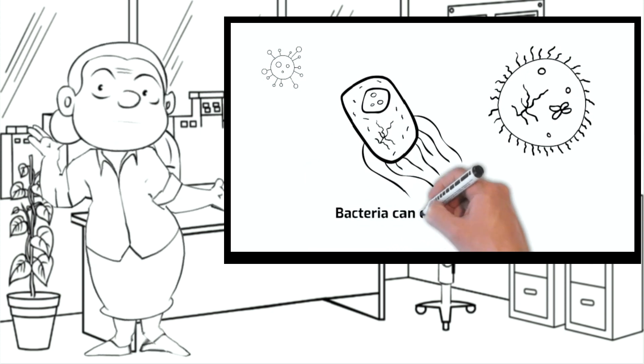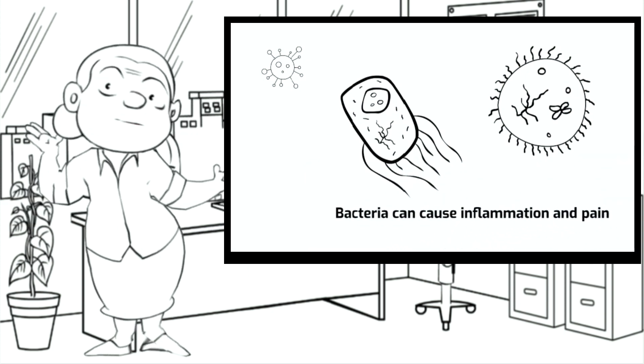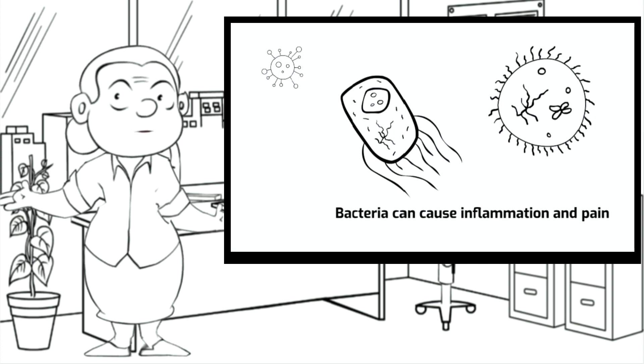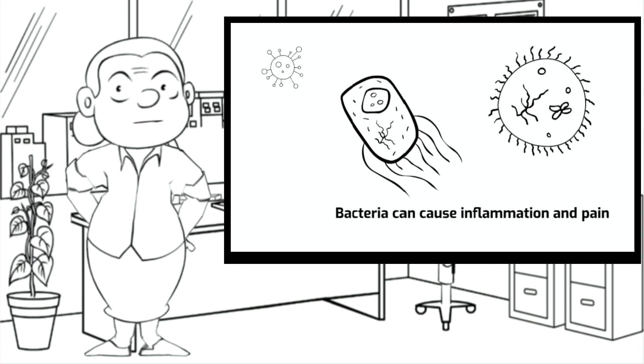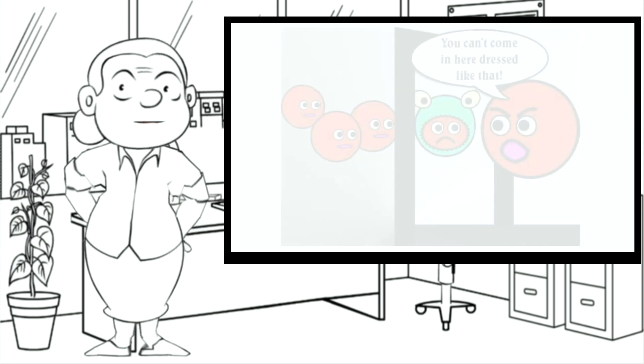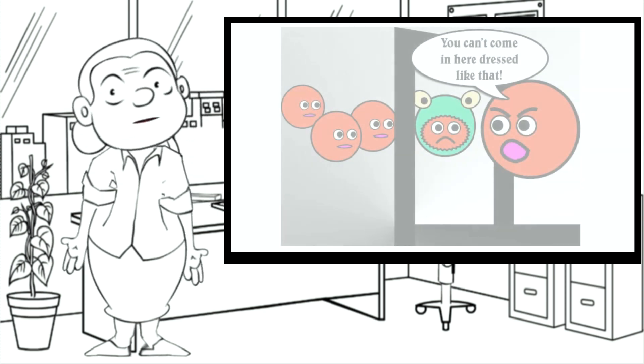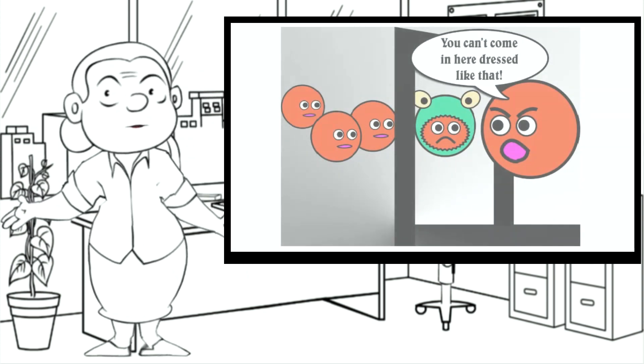Bacteria are the right size to get into the doorways of our cells. Our cells try to keep their doorways tight shut, but of course, they have to open to let food in, or hormones, or other life signals.